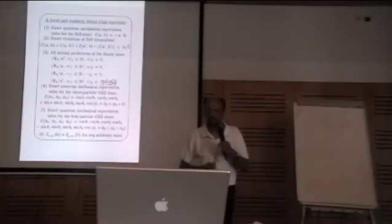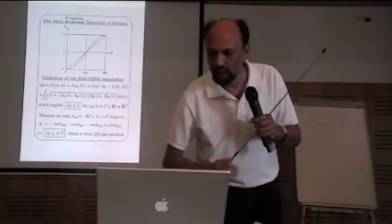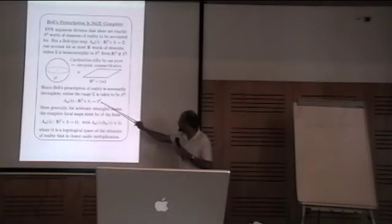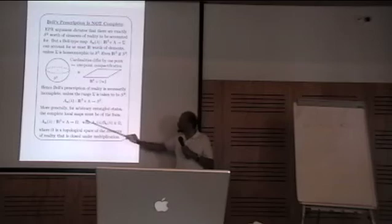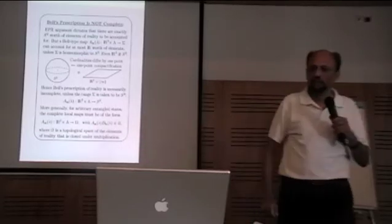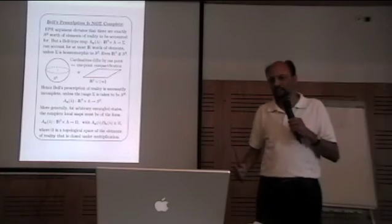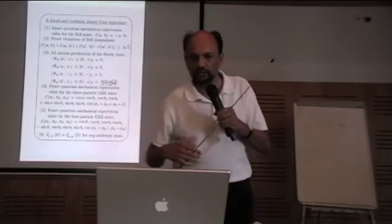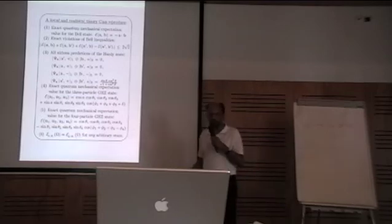I'm skipping about 35 pages of calculations. But the end result is that this map, this range of this map S2, is only for the entangled state. In more general state, any arbitrary quantum state, the range is actually an arbitrary topological space of elements of reality, and one has to be rather careful to choose that topological space to do the calculations. But when you do that, you can reproduce quantum mechanics, locally and realistically.